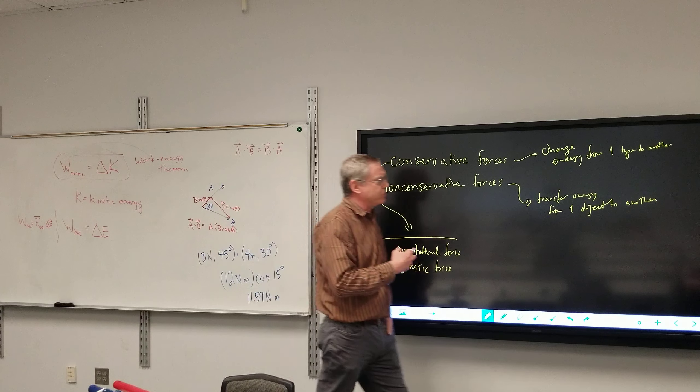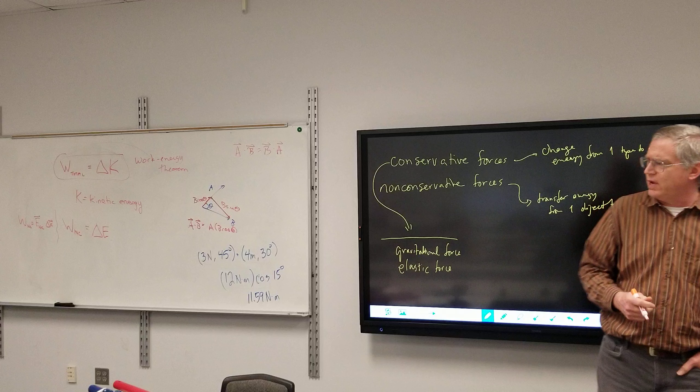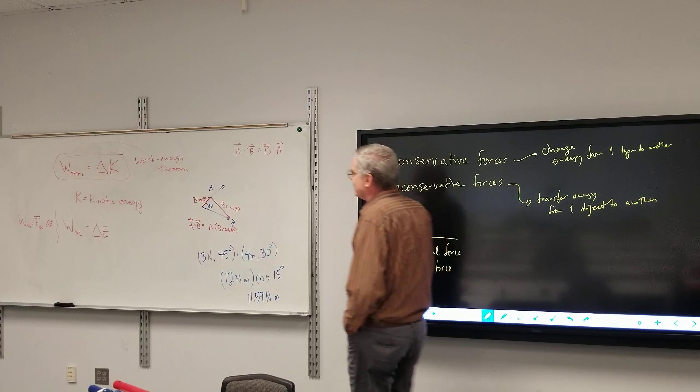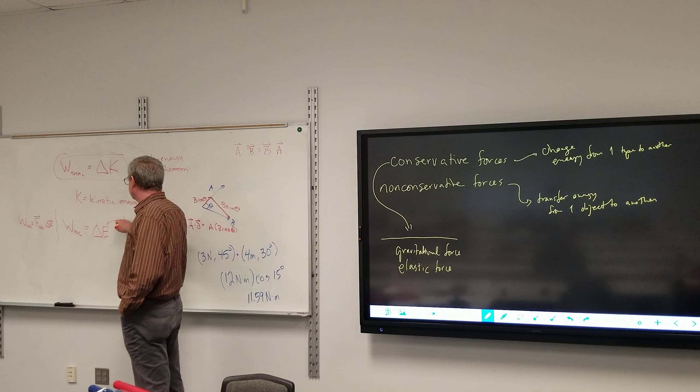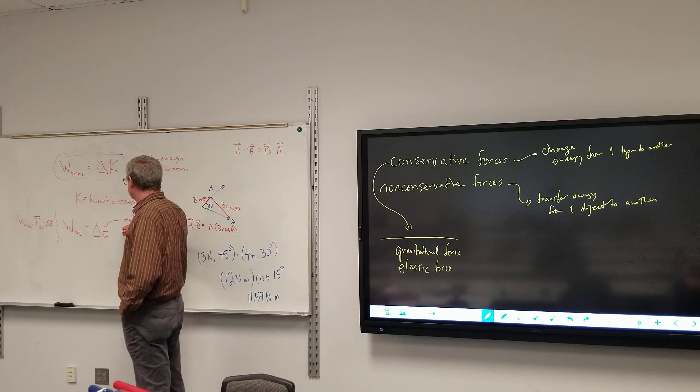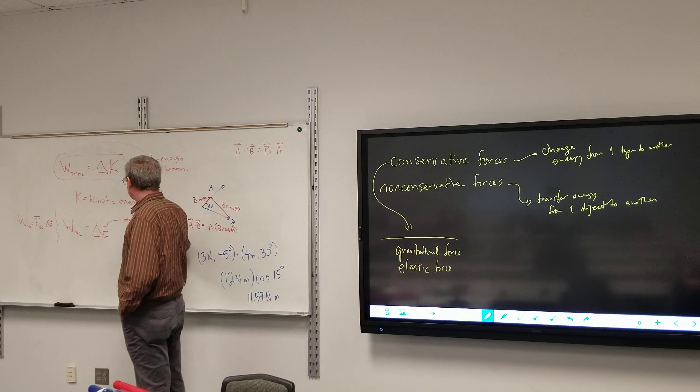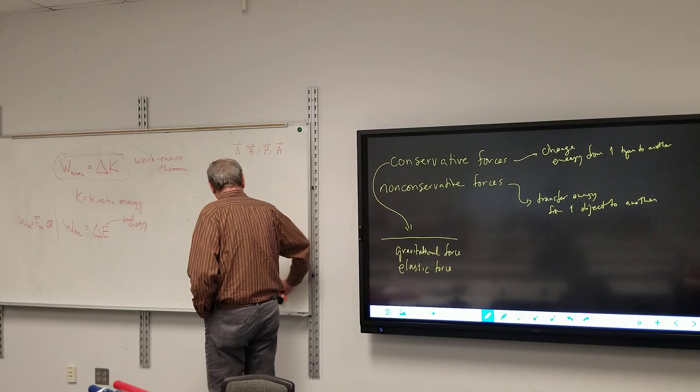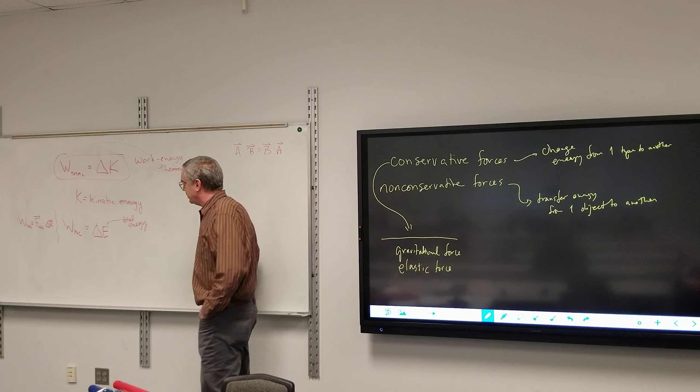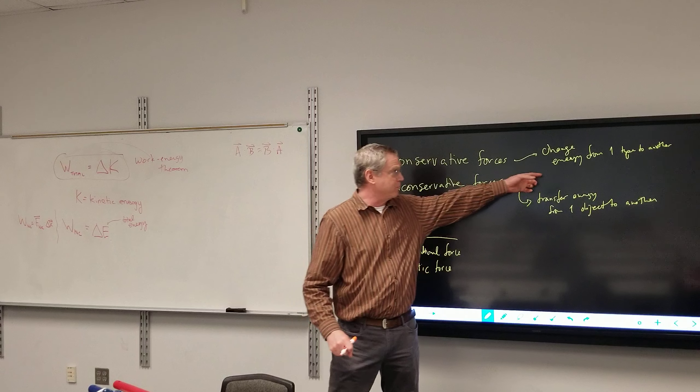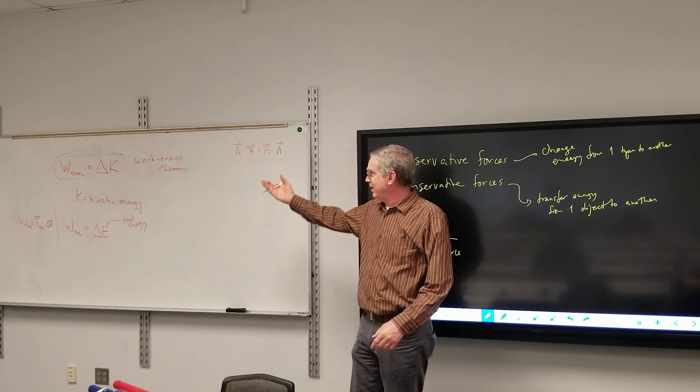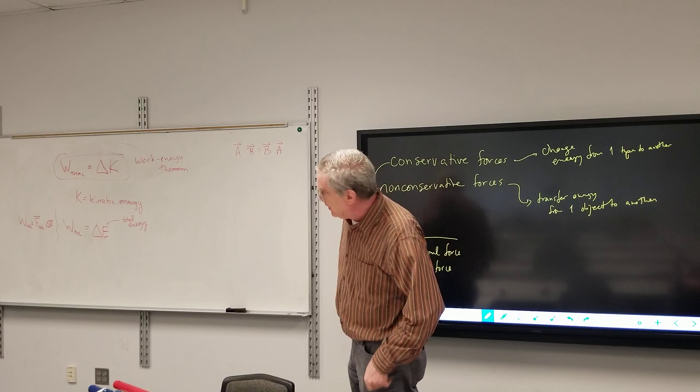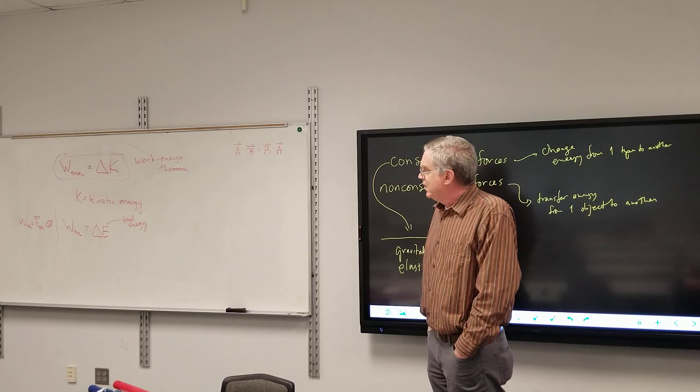That's the second of the work-energy relationships. If conservative forces are changing energy from one form to another, then there has to be - well I have kinetic energy, there's got to be another type of energy here. This E right here is total energy. So I've got to have another type of energy involved, because if I'm transferring from one type to another, there's got to be something other than just kinetic.